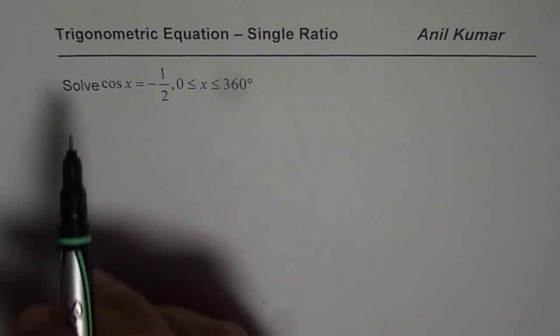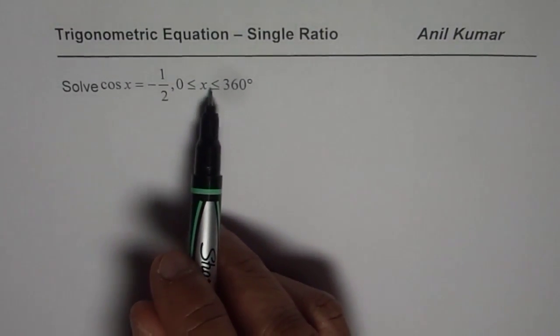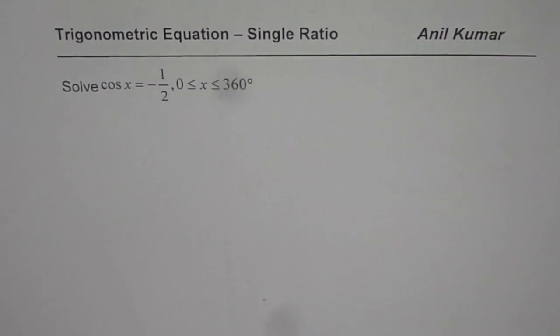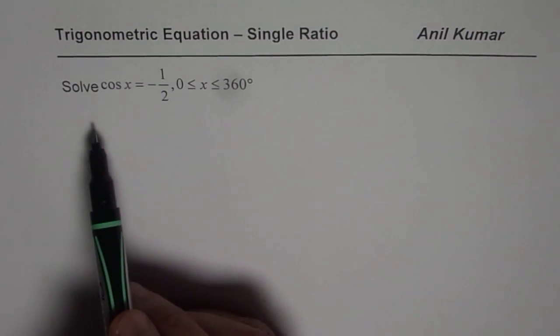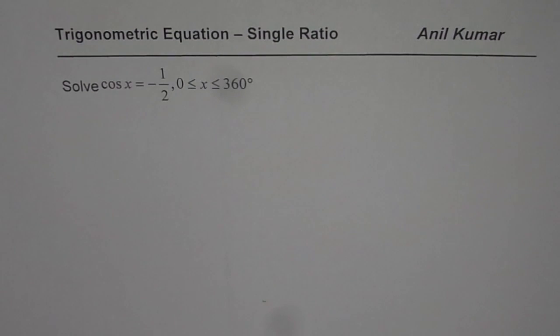This question is cos x equals minus half where x is between 0 to 360 degrees. This is an equation, and a trigonometric equation since we have one of our trigonometric ratios, cosine in this particular case. So it qualifies as a trigonometric equation, but it is one of the simplest of all and I think critical to understand.